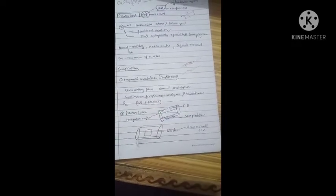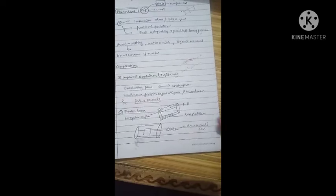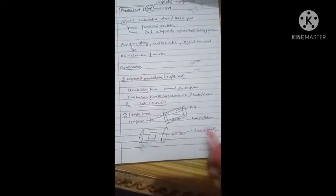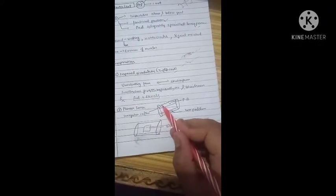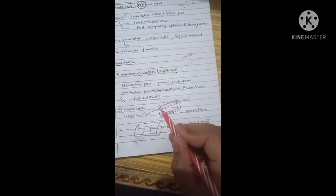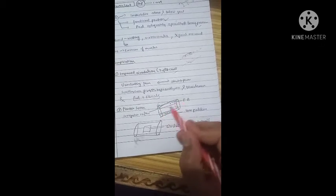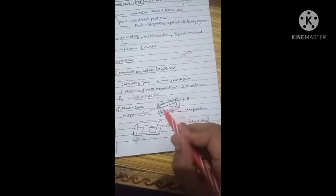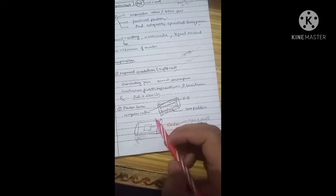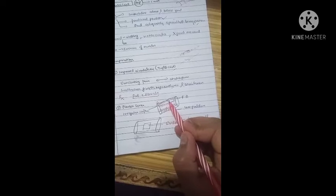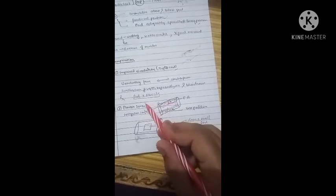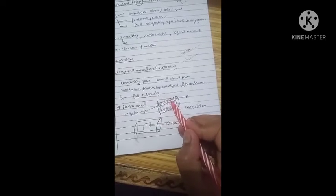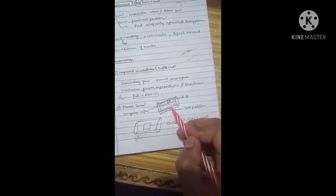The second complication is plaster sores. The three reasons for plaster sores are: irregular inner surface of the plaster cast, which can cause friction; a foreign body within the cast; and less padding.